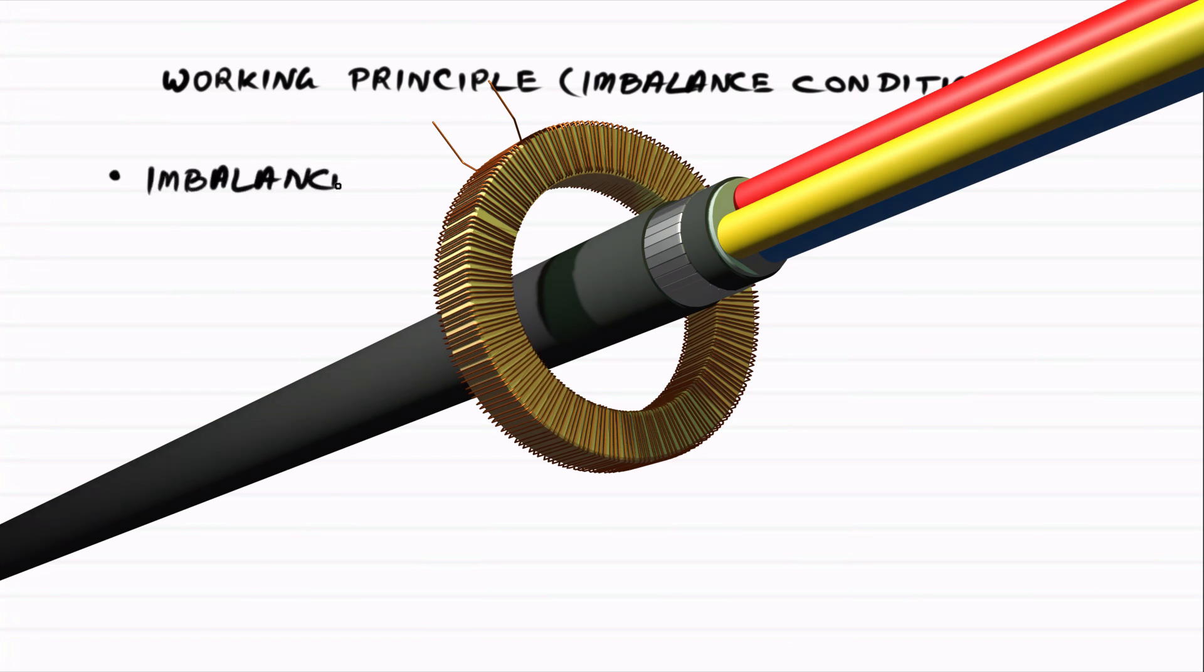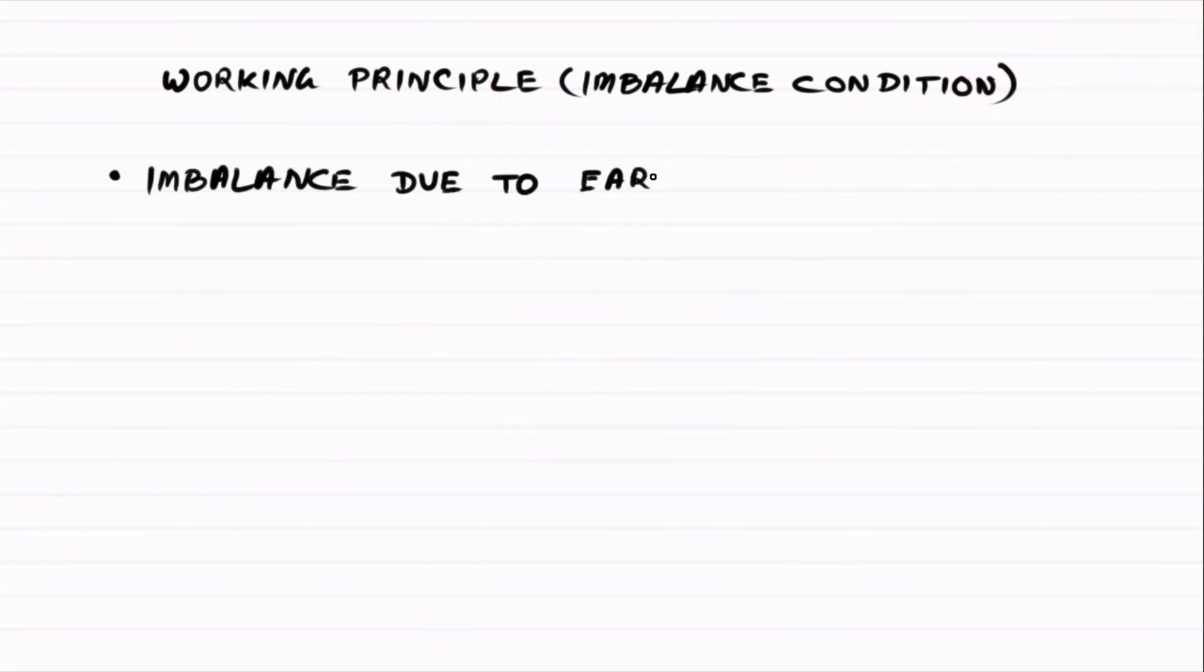But what happens if there's an imbalance? Say due to an earth fault or some leakage through insulation. In that case, the sum of the three currents is no longer zero.